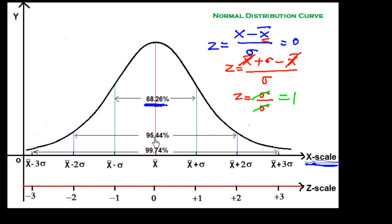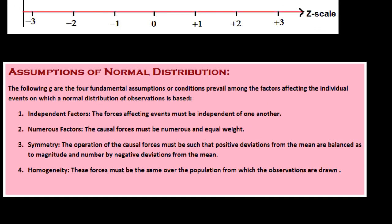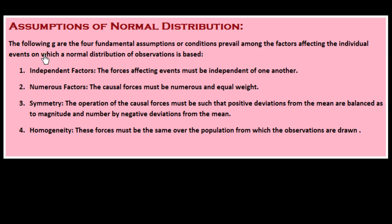Before the next session, I would like to explain the assumptions of normal distribution. The following are the four fundamental assumptions or conditions that prevail among the factors affecting individual events on which a normal distribution of observations is based. The first is independent factors: the forces affecting events must be independent of one another, just like heads and tails — there should be no intersection between two events.